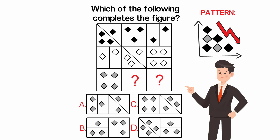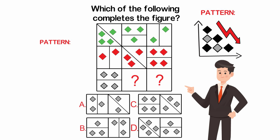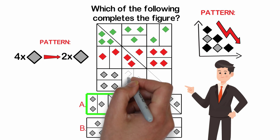In the top row, the top-left square contains four black diamonds, the middle square contains three diamonds, and the right square contains two diamonds. In the second row, the pattern reverses from right to left — white diamonds go from 4 down to 3 and then to 2. So in the bottom row we need to follow the same pattern: gray diamonds decreasing from 4 to 2.